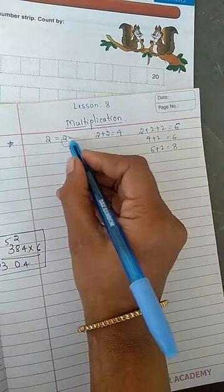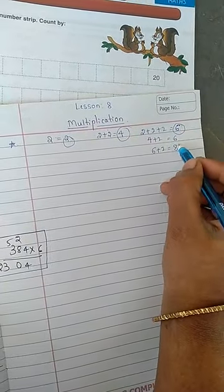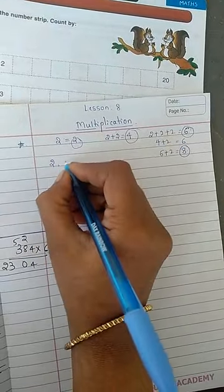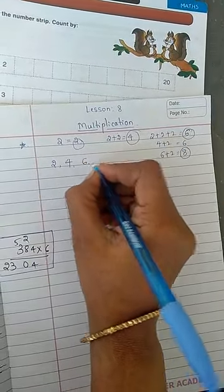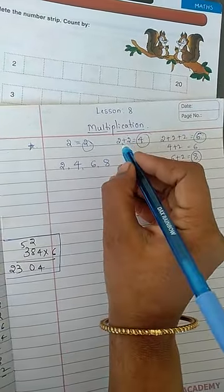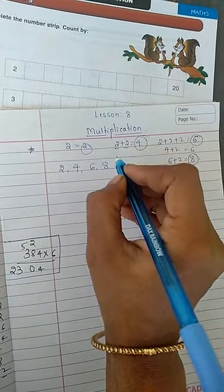See this whatever answer you have got here after doing addition repeatedly you are going to get table. 2 ones are 2, 2 twos are 4, 2 threes are 6, 2 fours are 8. What is that 2 twos are 4 is telling 2 you are adding how many times? 2 times.